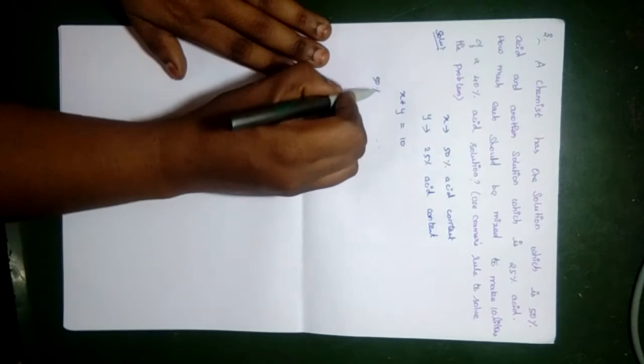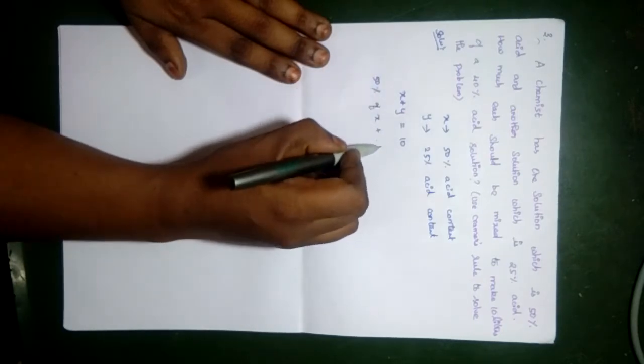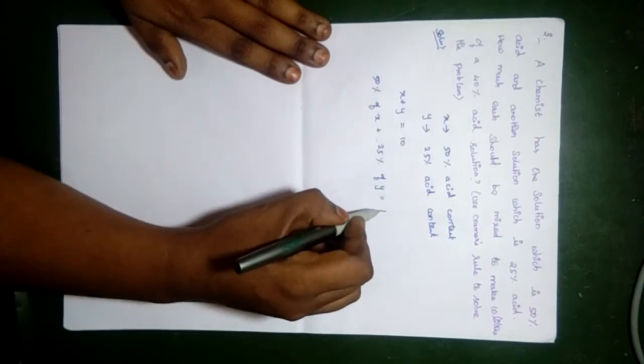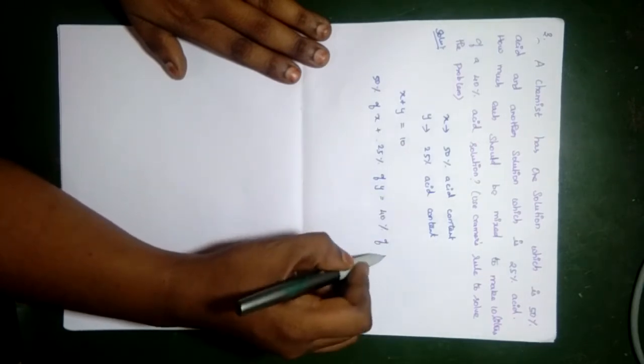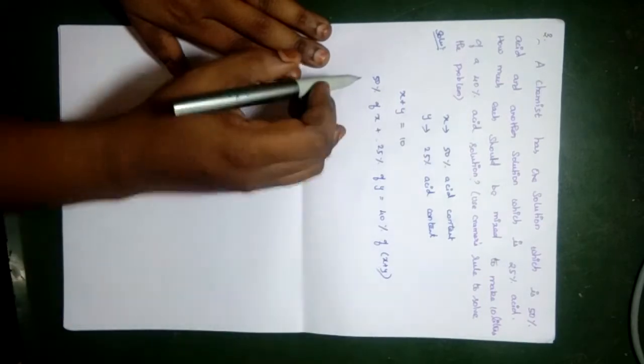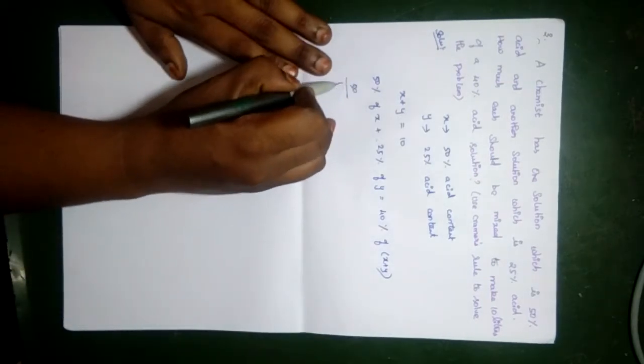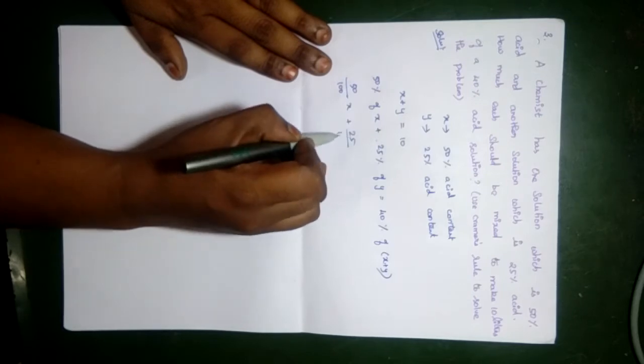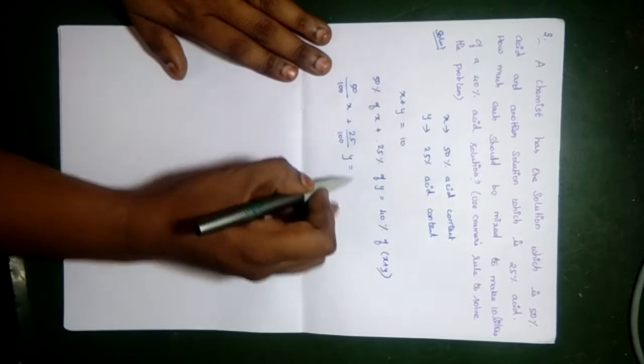Total equals X plus Y equals 10 liters. 50 by 100 into X plus 25 by 100 into Y equals 40 by 100 into 10.